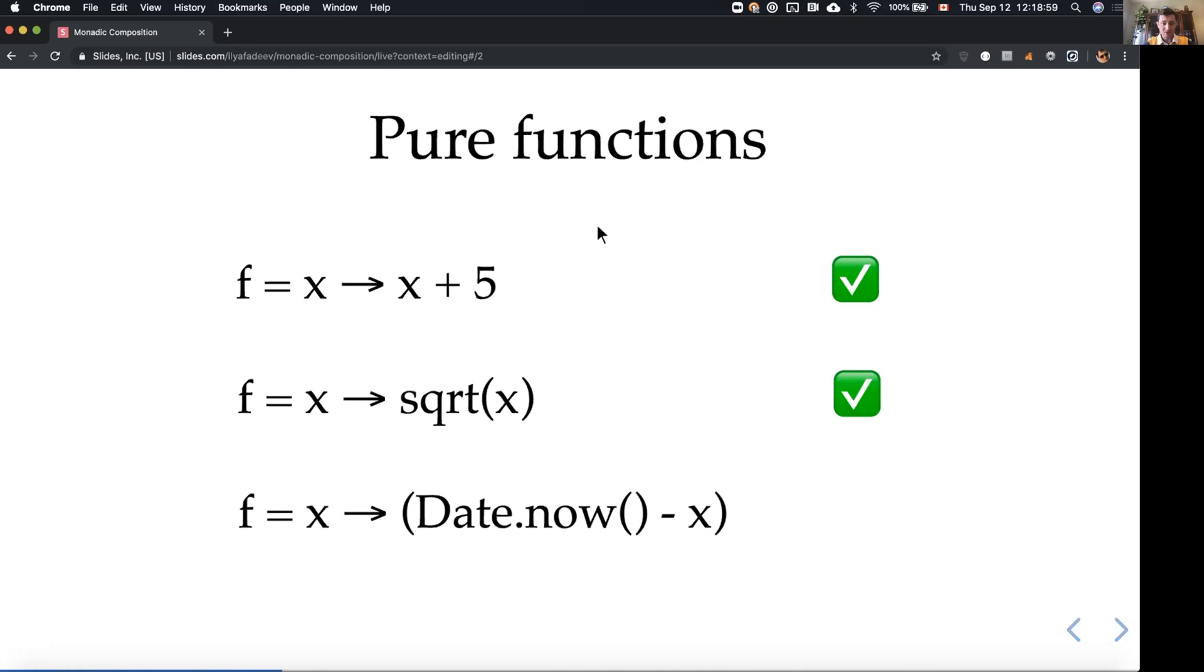The last example is the next. Here, given a number, we are calling a method now of object date and subtracting the given input. This is not a pure function because the result of the method now, which is a timestamp, current timestamp, and it's different every moment. If we call this function with the same argument multiple times, we will be getting different results.